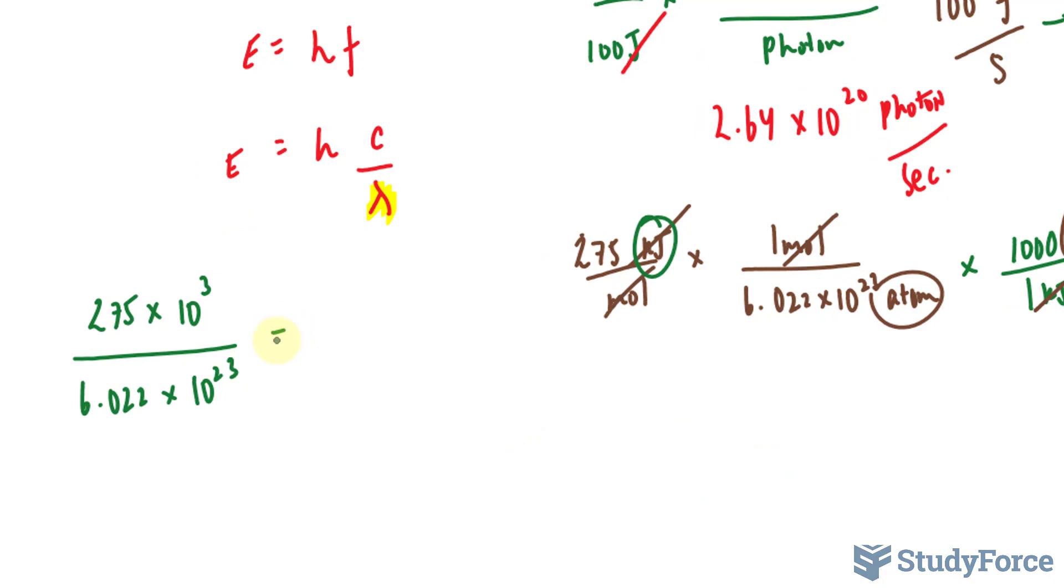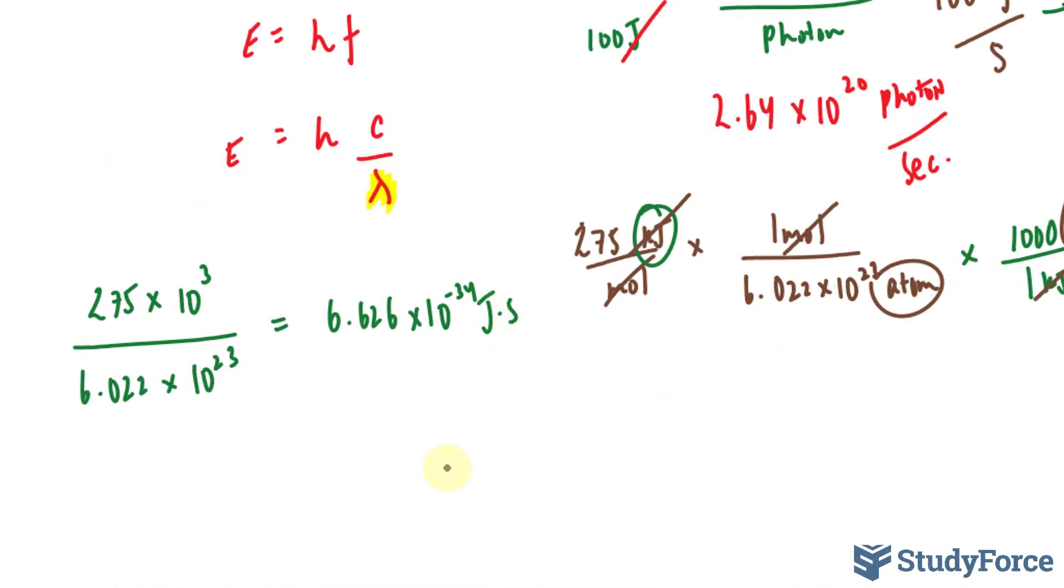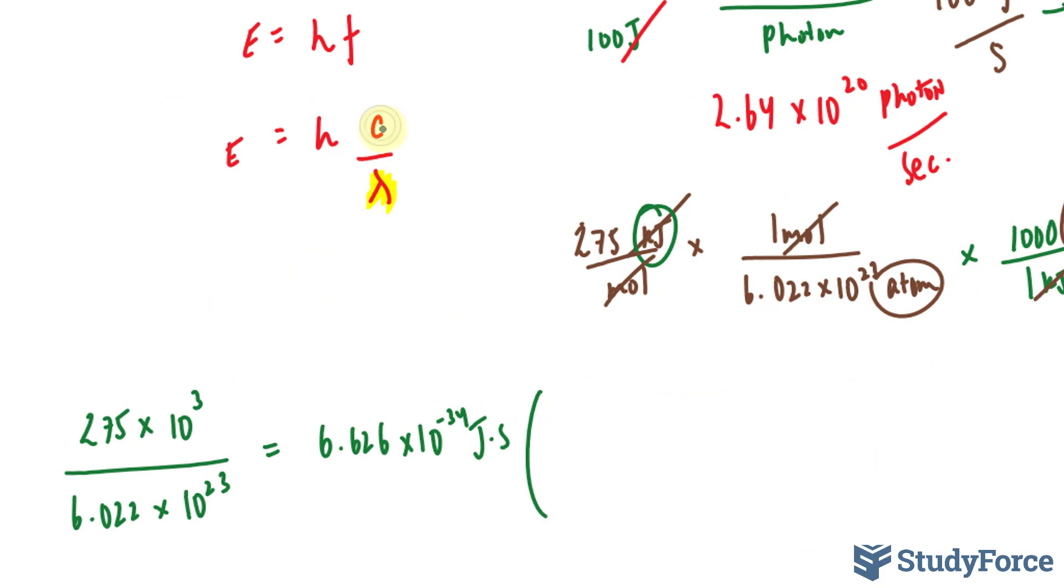And this is equal to Planck's constant, which we define as 6.626 times 10 to the power of negative 34 joules times seconds. This is being multiplied to c, which is the speed of light, 3.00 times 10 to the power of 8 meters per second. And the wavelength is what we're looking for.